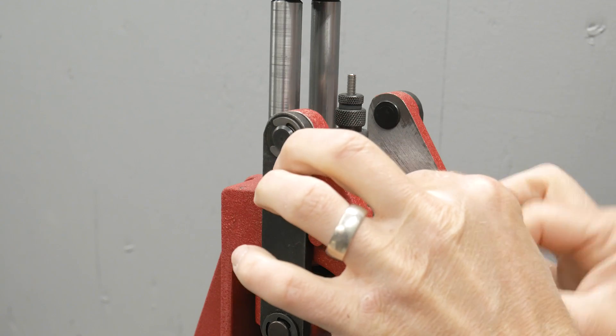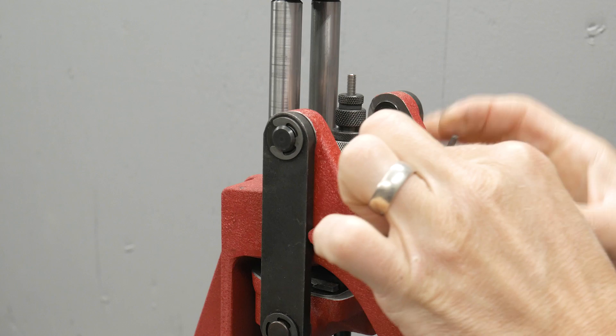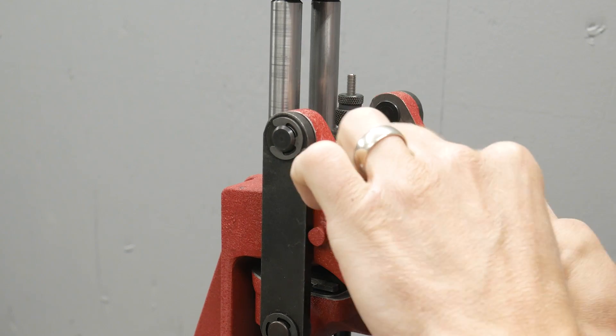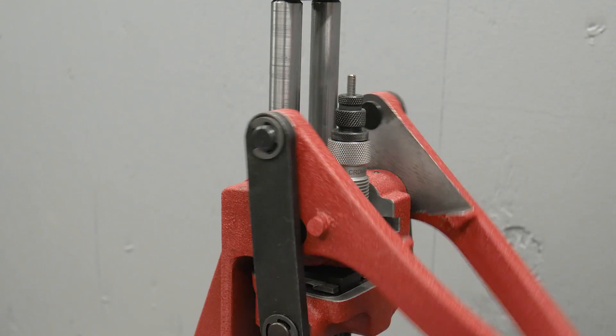Now, what we can do is we can actually lift and lower the die in order to slightly change the amount of shoulder bump. But first, we need to check to see where we're at.